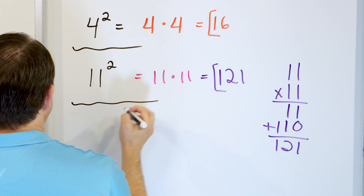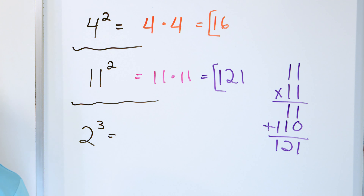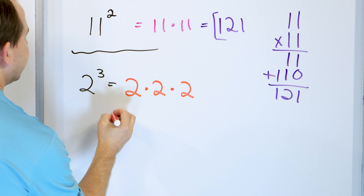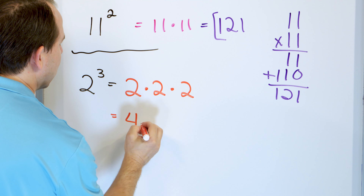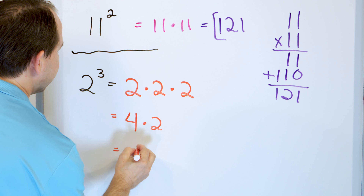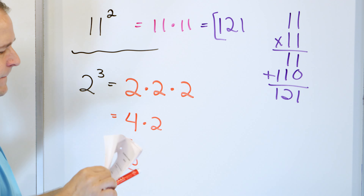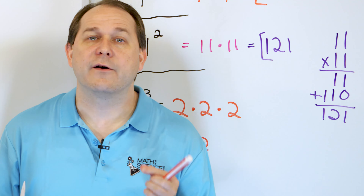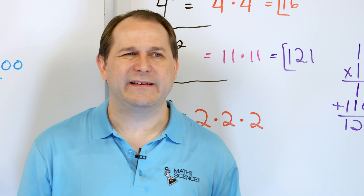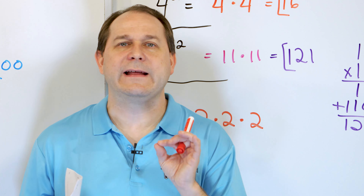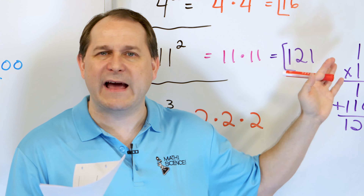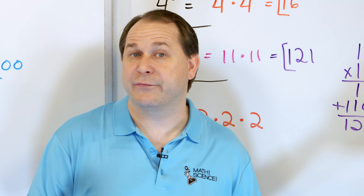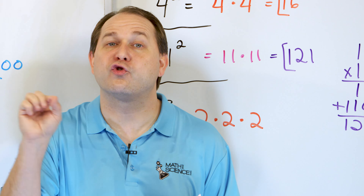Here's our last problem: 2 to the power of 3. We have the base 2 multiplied by itself — that would be 2 squared — and we have to do it one more time because it's to the power of 3. Multiplying left to right: 2 times 2 is 4, and 4 times 2 is 8. So 2 to the power of 3 is 8. We've introduced the concept of exponents — it's just a shortcut, a shorthand way of writing down multiplication. You'll find these exponents pop up everywhere as we go further in math. In the next lesson, we're going to increase the exponent a little bit more, but the same exact concept applies.